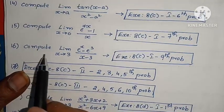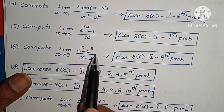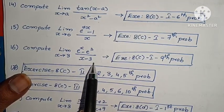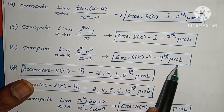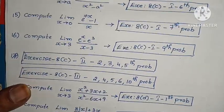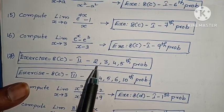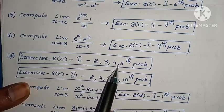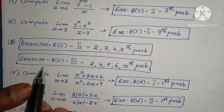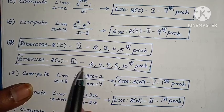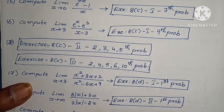Next, compute limit x tends to 3, e to the power x minus e to the power 3 by x minus 3 — C, first Roman, 9th problem. Next, C, second Roman, 2nd, 3rd, 4th, and 5th problems. Next, C, third Roman, 2nd, 4th, 5th, 6th, and 10th problems.